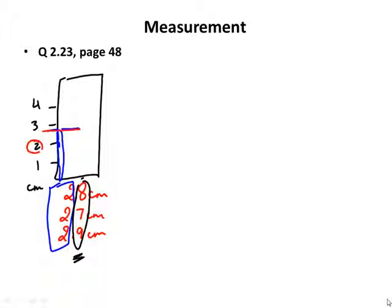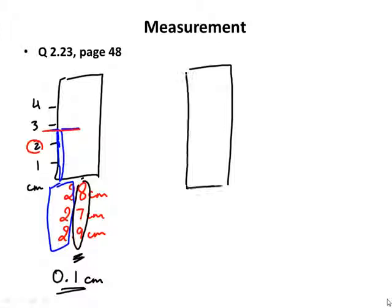In this particular case, I can read it as 2.8 centimeters. Someone else could read it as 2.7 or 2.9. The point is that two is the last certain digit, whereas the first decimal place is the uncertain digit. The uncertainty in this ruler lies in the first decimal place — the tenths place.